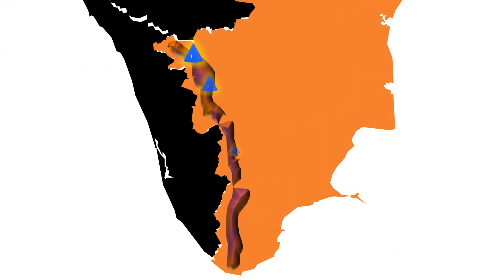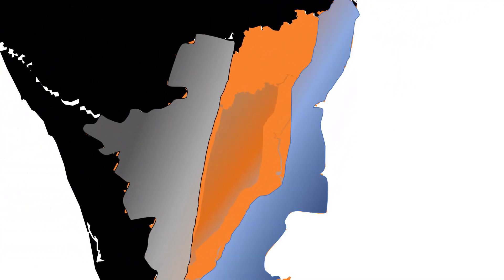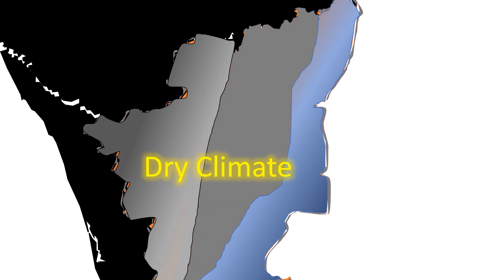Western Tamil Nadu is bordered by mountain ranges, whose altitude lessens the temperature of the surrounding places. The climate noticed here is mountainous climate. The region we find in the middle, being far away from the sea and mountains, experiences a very dry climate.